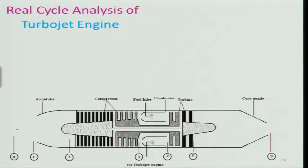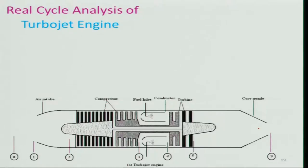For the turbojet engine, the air intake handles all compression from station 0 to 2. There is a compressor and turbine — the work done by the turbine drives the compressor. The thrust is obtained by expansion in the nozzle. Here I have shown a convergent nozzle, but a convergent-divergent nozzle can also be used; we will restrict our discussion to the convergent nozzle.